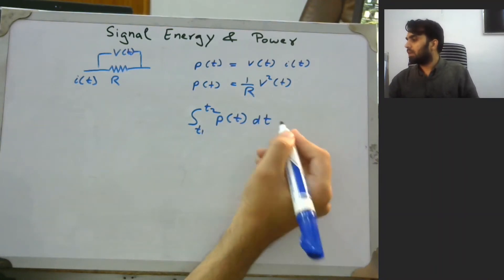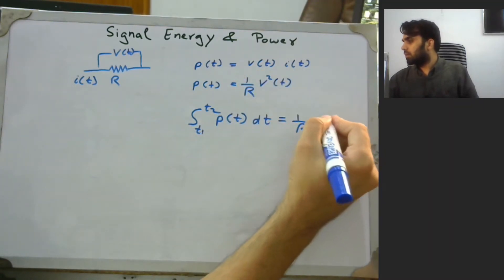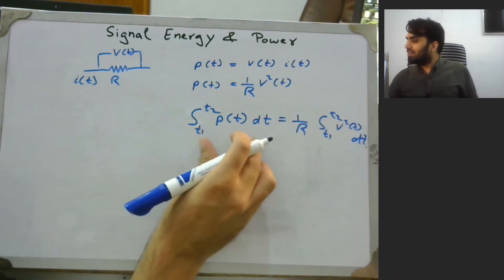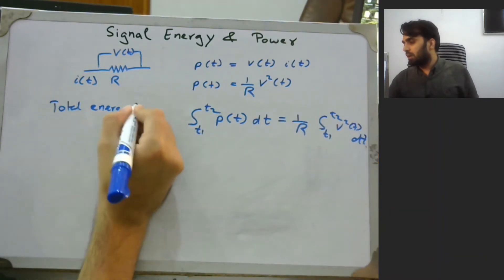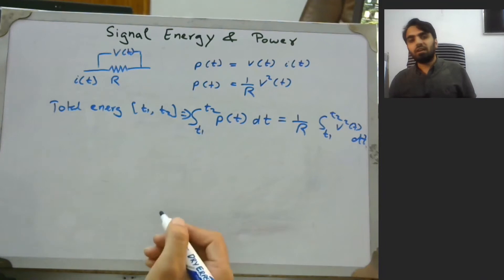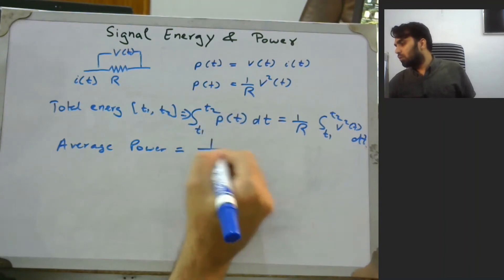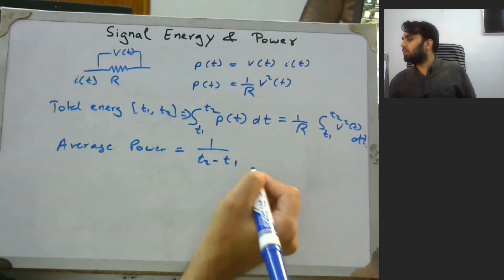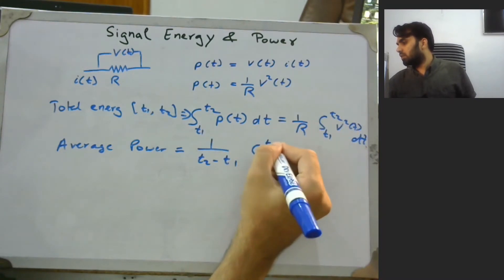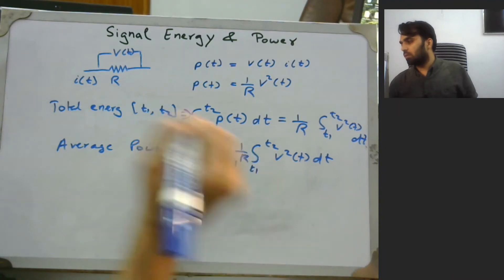That total energy equals (1/R) times the integral from t1 to t2 of v²(t) dt — this is the total energy in the interval t1 to t2. If we are interested in the average power, that is equivalent to 1/(t2 − t1) times the integral from t1 to t2 of p(t) dt, which simplifies to (1/R) times the integral from t1 to t2 of v²(t) dt.